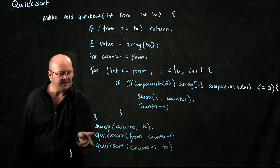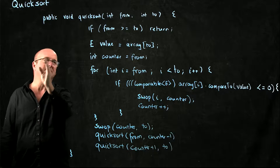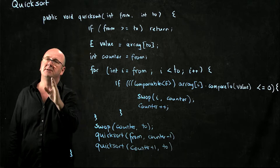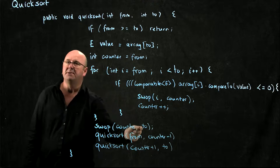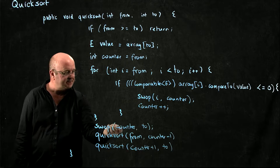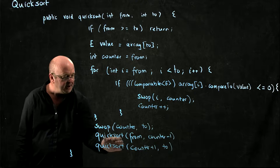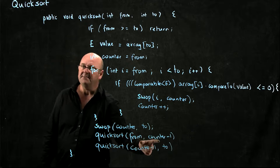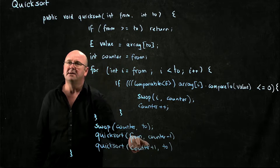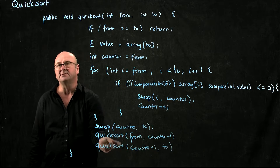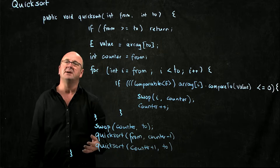So we've got a recursive algorithm. We move the smaller things to the left-hand side of counter and the larger things to the right-hand side. We swap the pivot value into the middle at the counter position. Then we do the left-hand side and the right-hand side. Notice that in neither of these quicksort calls do we actually include the counter — it's where it should be, it doesn't need to move anymore.